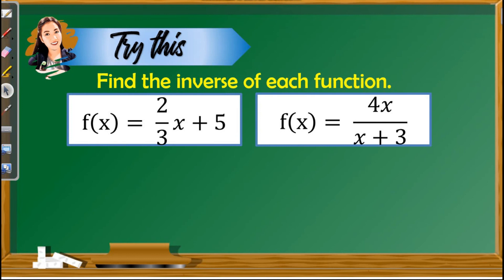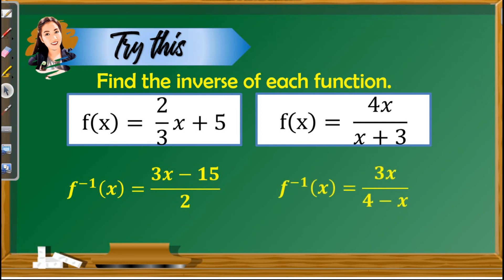After our discussion, it is now time to test yourself. Find the inverse of each function. You may pause the video so you can answer these two items. Let's check our work. For the first one, the inverse is (3x − 15)/2. For the second, its inverse is 3x/(4 − x).